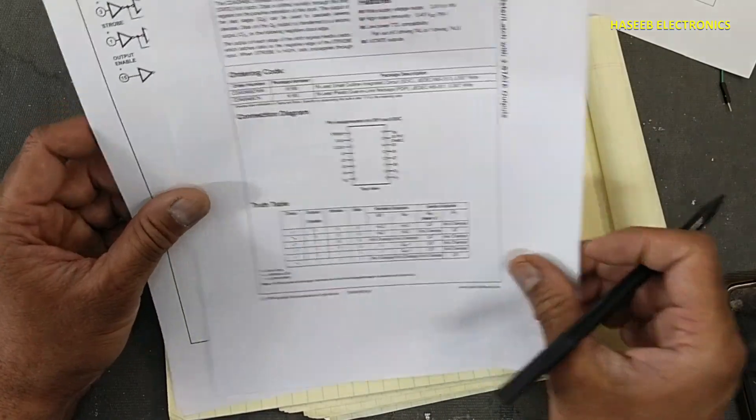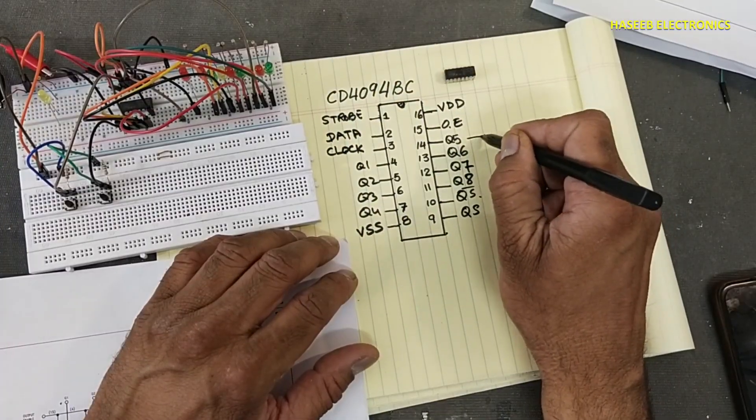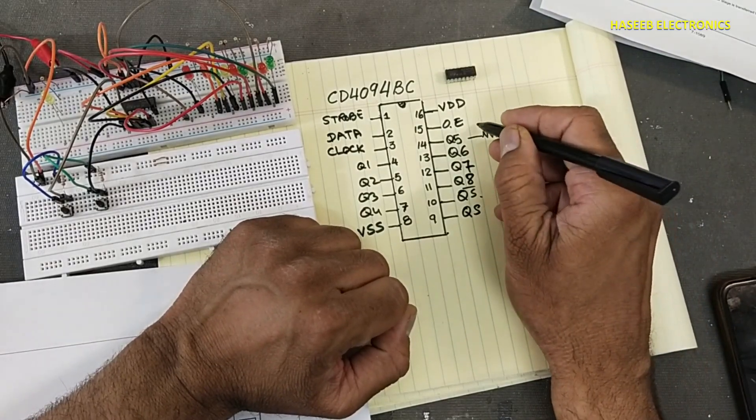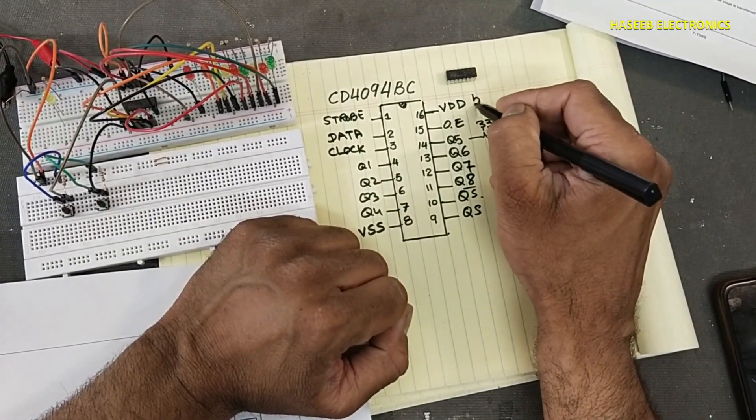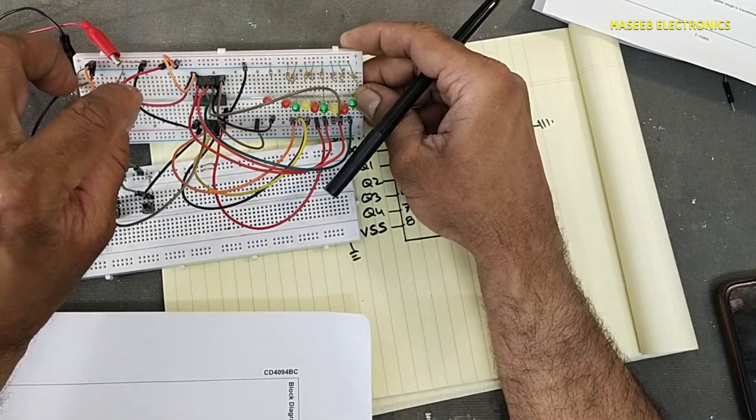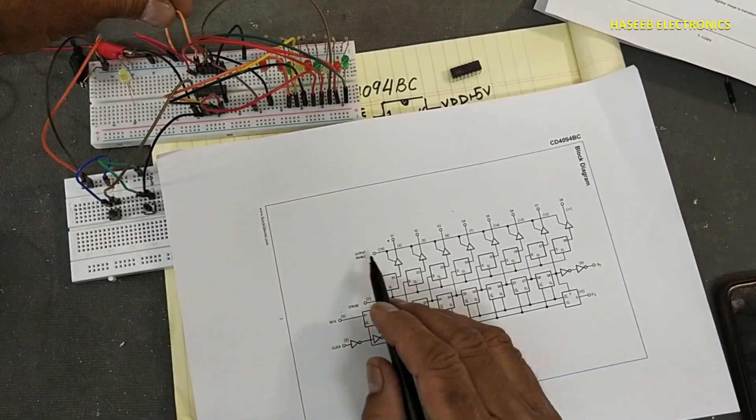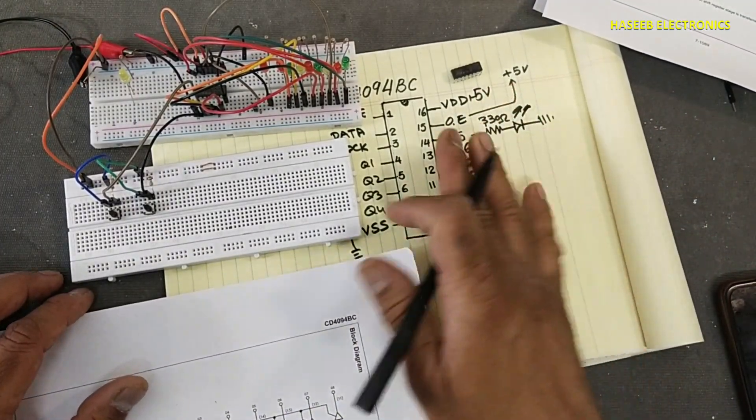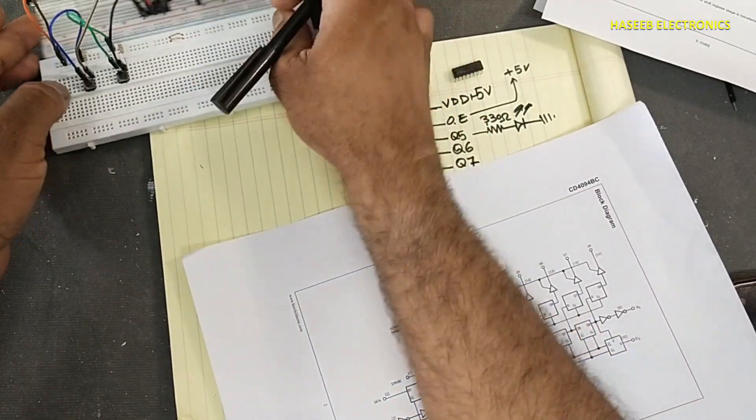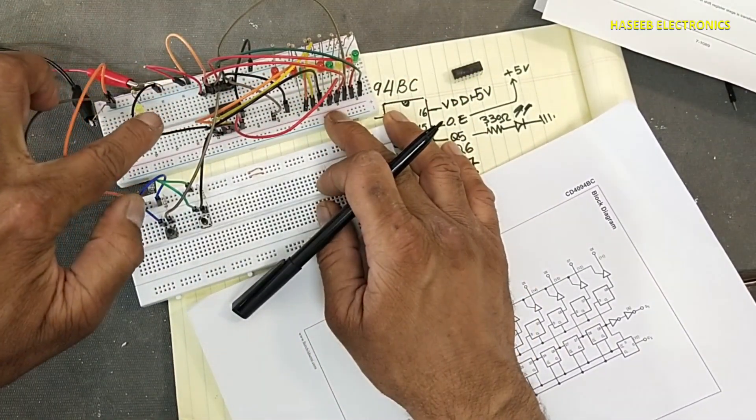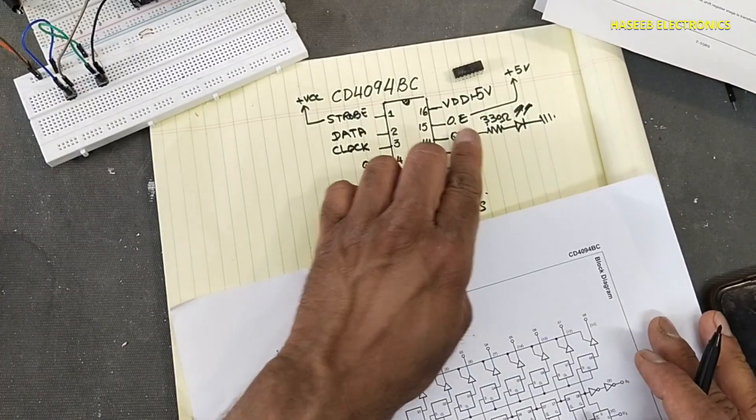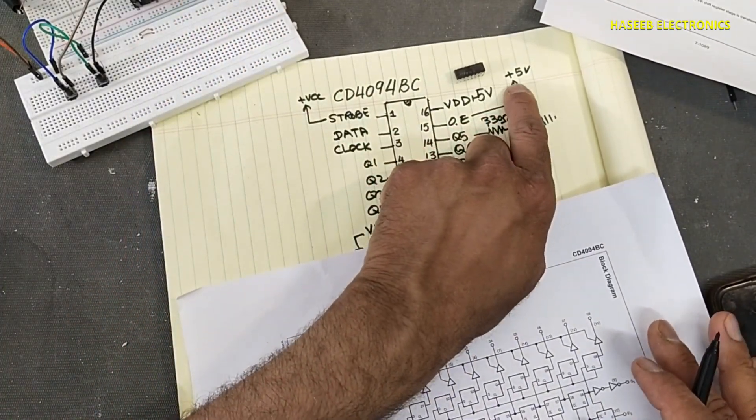Let's see it practically. I connected 330 ohm resistance with one LED. I connected 330 ohm resistance and applied five volt supply. This end is grounded. Here I connected pin number 16 to VCC. I connected pin number 15 to high positive five volts. When it is high, this IC will start to provide output directly. And strobe, strobe is pin number one, pin number one that is also connected to positive.